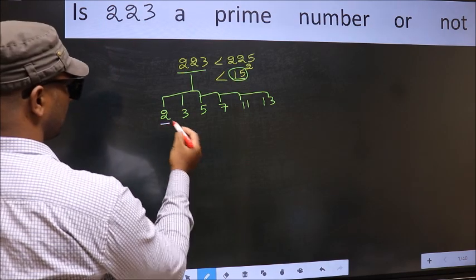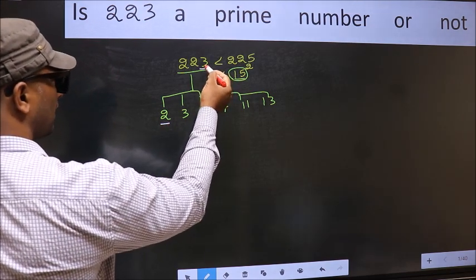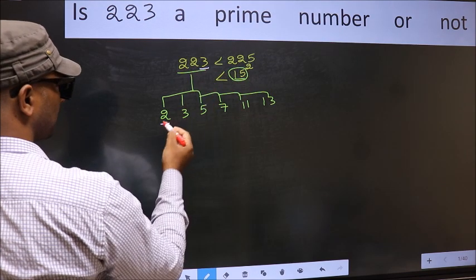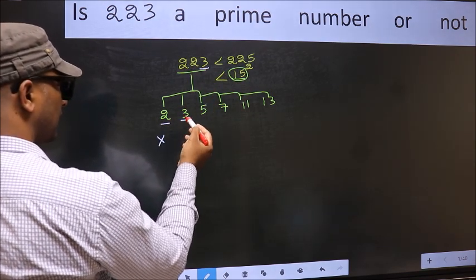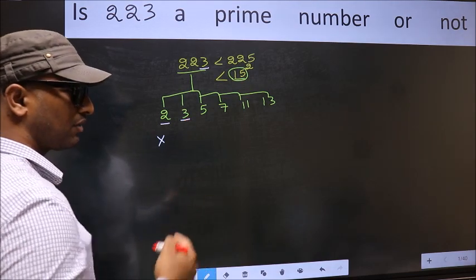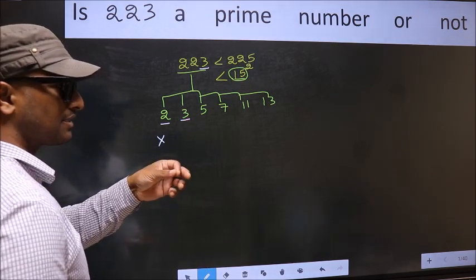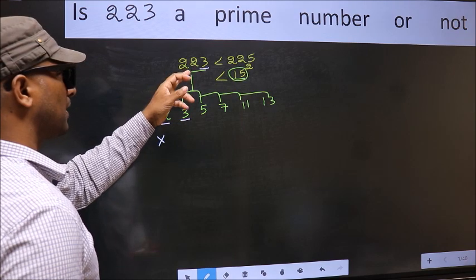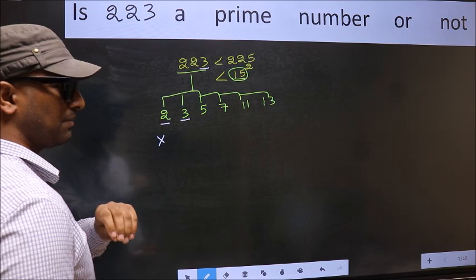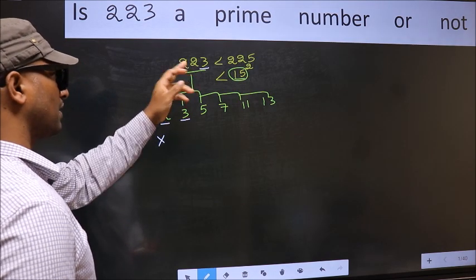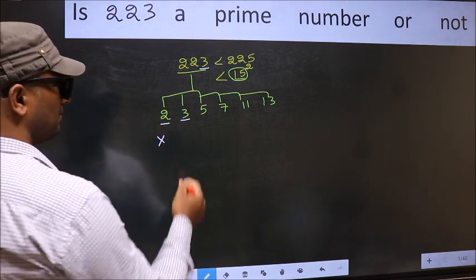Starting with 2. Last digit 3 not even so this is not divisible by 2. Next number 3. To check divisibility by 3, add the digits: 2 plus 2 plus 3, we get 7, and 7 is not divisible by 3. So this number also not divisible by 3.